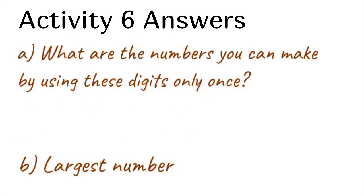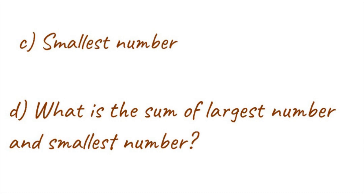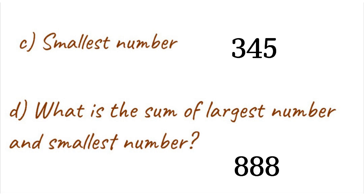Activity 6 Answers. Using the digits on the cube, the numbers you can form are: 534, 543, 345, 354, 453, 435. B. Largest number: 543. C. Smallest number: 345. D. Sum of largest and smallest: 543 plus 345 is equal to 888.